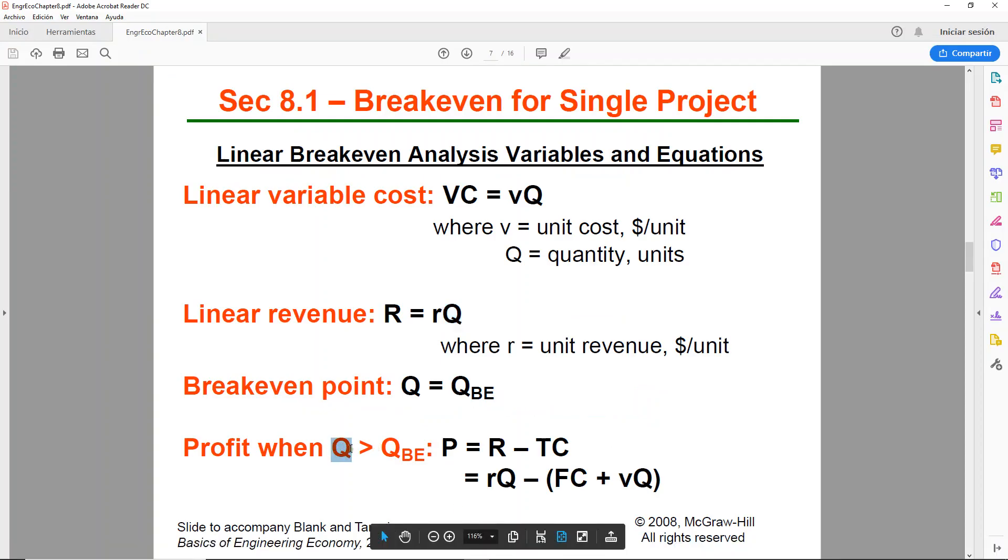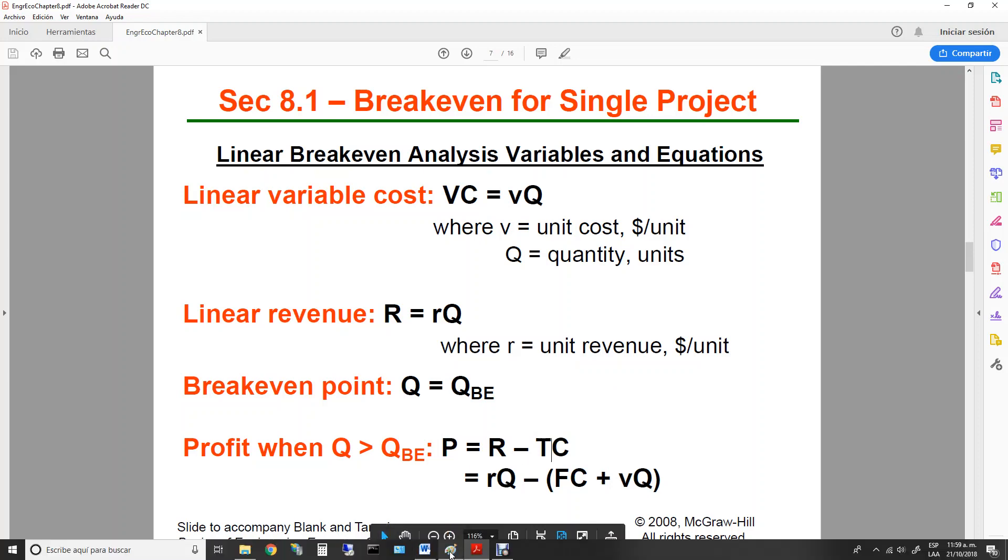So then again, we know that whenever the Q is greater than the QBE, like in that case, 8,000, it's greater than 7,500, we will be using this formula because there will be a profit. So it's going to be the revenue minus the total cost, and then we can plug in or break it down, the R and the total cost. Remember that the total cost is made up of the fixed plus the variable. Okay, so let's use that formula to solve the question.